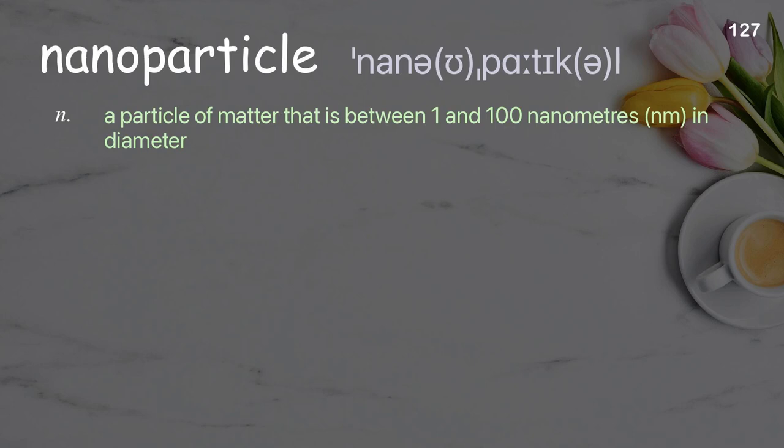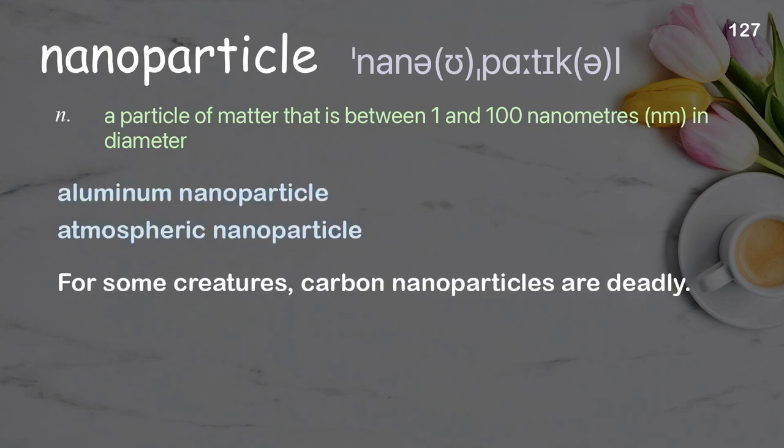Nanoparticle: a particle of matter that is between 1 and 100 nanometers in diameter. Examples: aluminum nanoparticle, atmospheric nanoparticle. For some creatures, carbon nanoparticles are deadly.